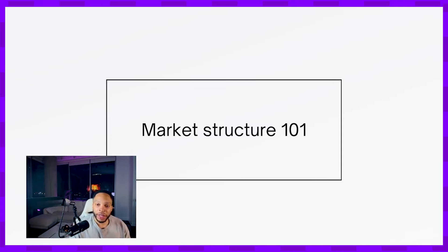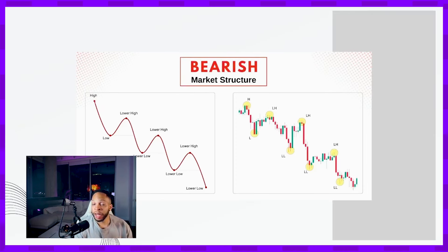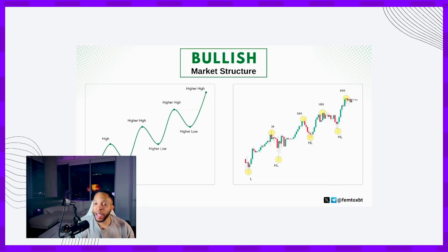In today's class I want to teach you about market structure so you can know if we're in a bull market, which is a market going up in price, or a bear market, which is a market going down in price. A bullish market is one where buying pressure is outweighing selling pressure, and you're going to see higher highs and higher lows.